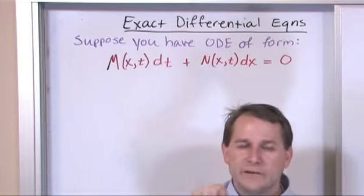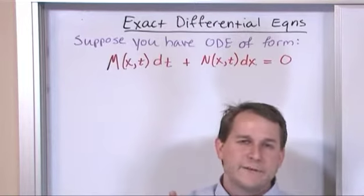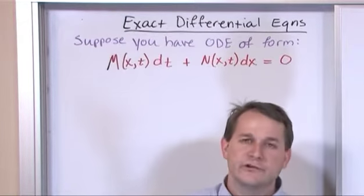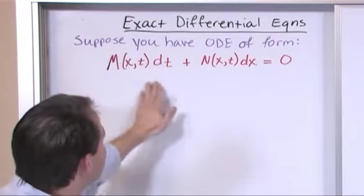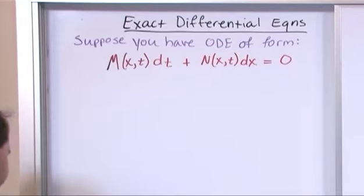Because when you have dx over dt you can sort of treat that as a fraction, move the dt over here and such, like we were doing from separation of variables. So you need to basically be able to beat it into this form.